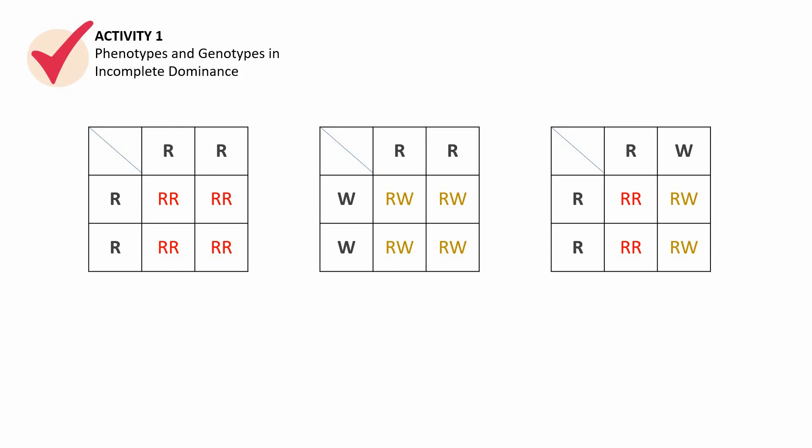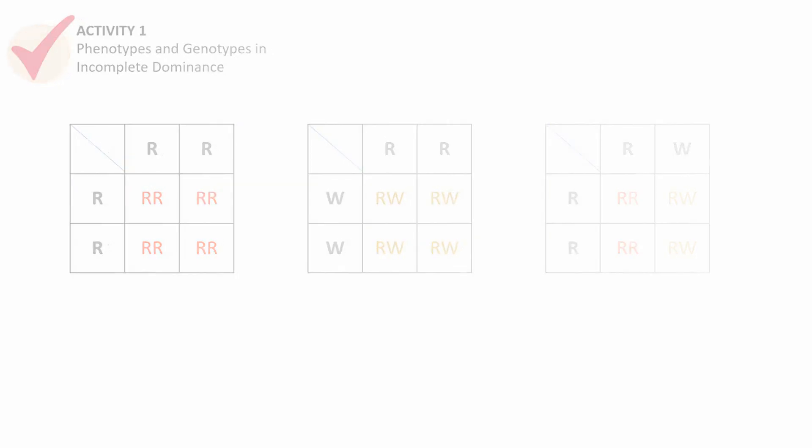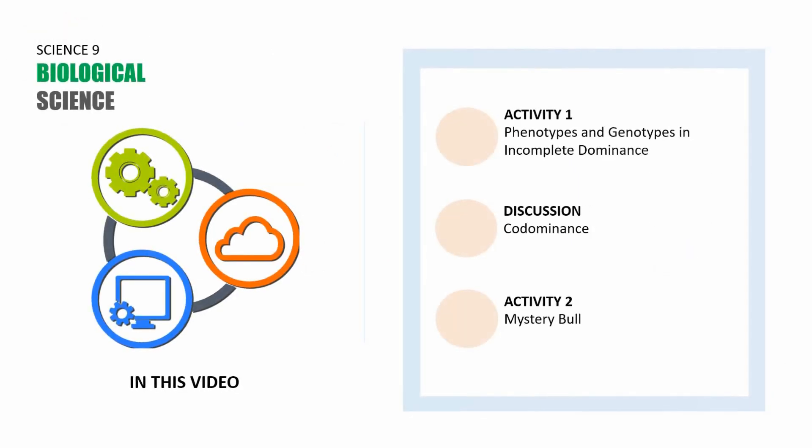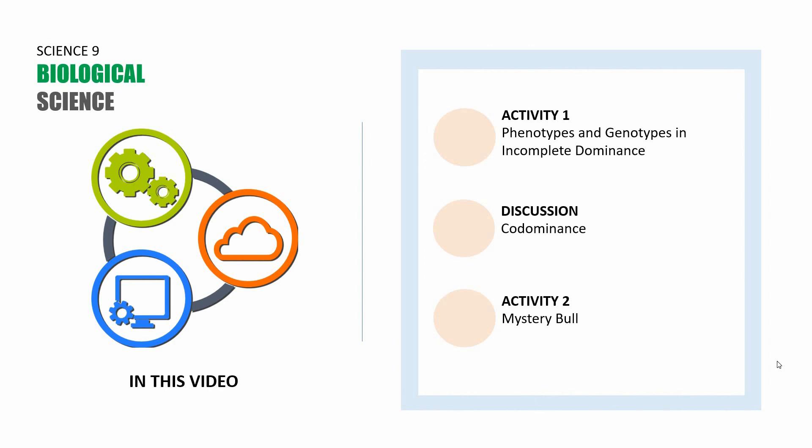That ends activity number two, Mystery Bull. This is session number eight. It has the following parts. The first part is activity number one, phenotypes and genotypes in incomplete dominance, then a discussion about codominance, and activity number two, Mystery Bull.